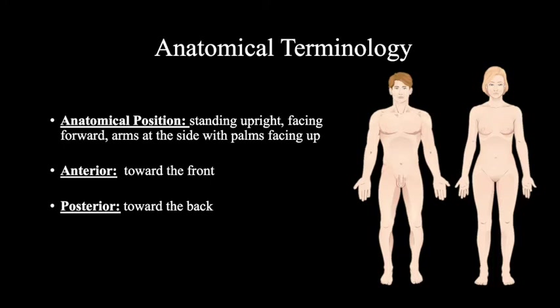Next, two terms are anterior and posterior. Anterior refers to anything that is on the front side of the body, and posterior refers to anything that is on the back side of the body. For example, our chest is on the anterior side of our body, while our back is on the posterior side of our body.